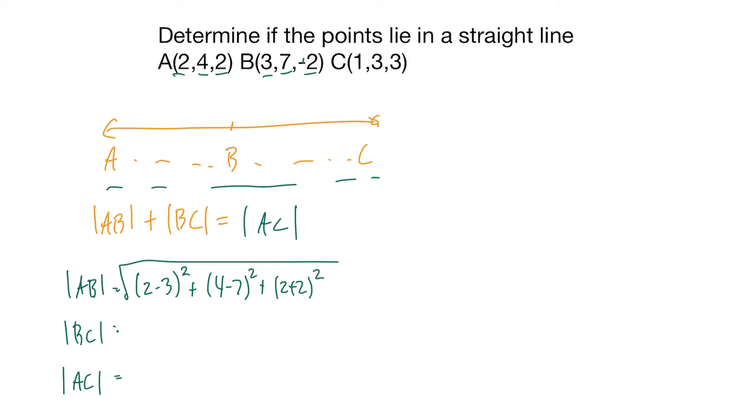And for BC, do 3 minus 1 squared plus 7 minus 3 squared plus negative 2 minus 3 squared.